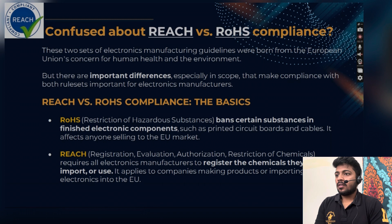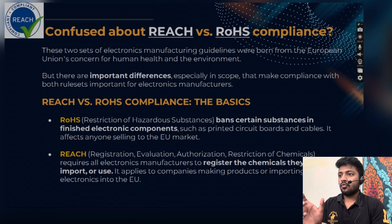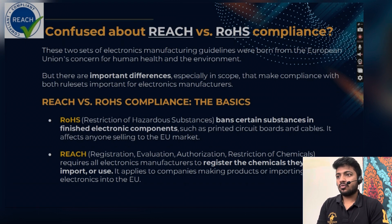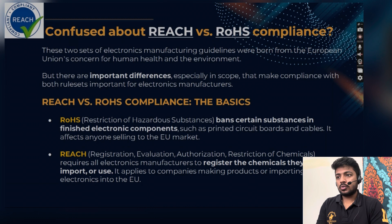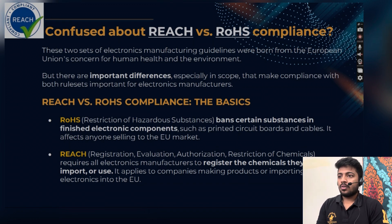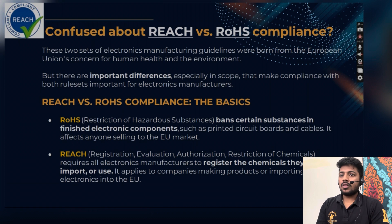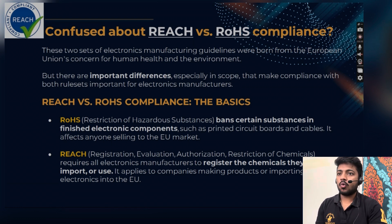REACH stands for Registration, Evaluation, Authorization, and Restriction of Chemicals. R stands for Registration, E for Evaluation, A for Authorization, and CH for Restriction of Chemicals. REACH requires all electronics manufacturers to register the chemicals they produce, import, or use. It applies to companies making products or importing electronics into the EU. Whoever is importing into the EU must register the chemicals and comply with REACH in order to sell their product in the EU market.